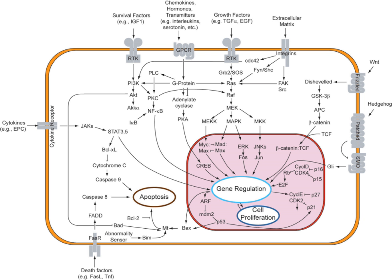Cells communicate with each other via direct contact (juxtacrine) signaling, over short distances (paracrine) signaling, or over large distances (endocrine) signaling. Some cell-cell communication requires direct cell-cell contact. Some cells can form gap junctions that connect their cytoplasm to the cytoplasm of adjacent cells. In cardiac muscle, gap junctions between adjacent cells allow for action potential propagation from the cardiac pacemaker region of the heart to spread and coordinate contraction of the heart.